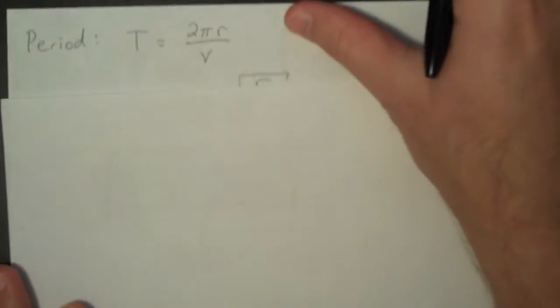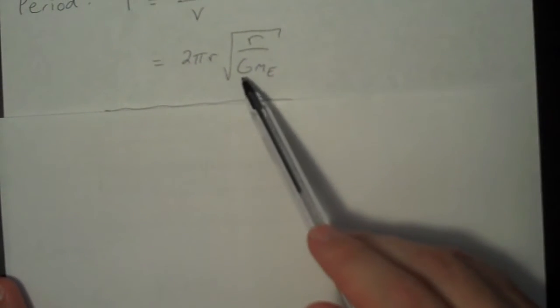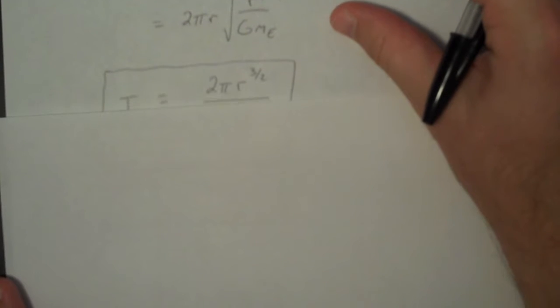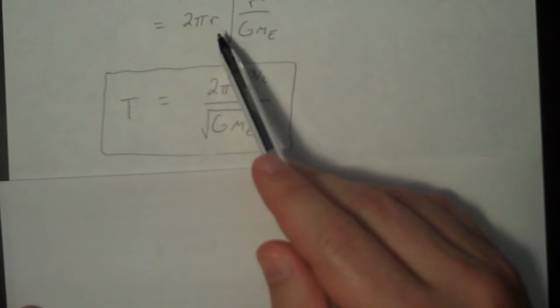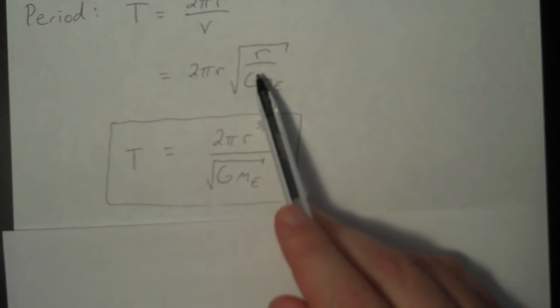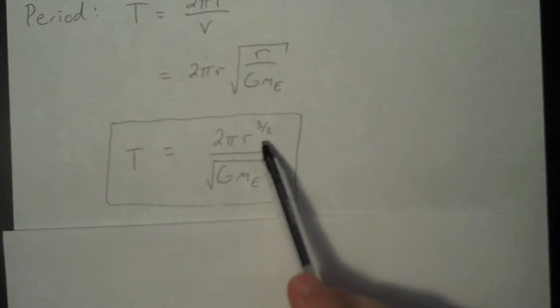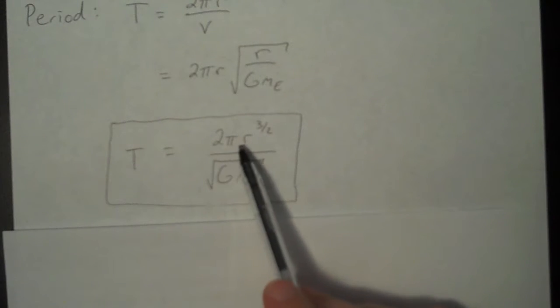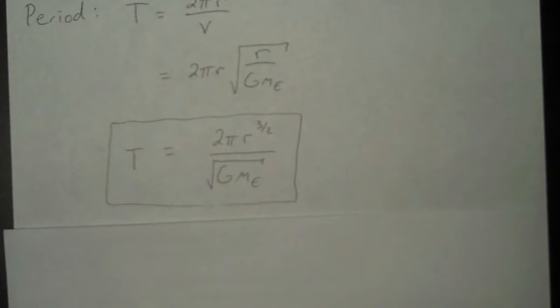So you plug that in. And let's clean it up a little bit. We have r times the square root of r. That's just r to the three halves. Still have the two pi, and it's divided by the square root of g times m_e. So there is the period of a satellite in a circular orbit.